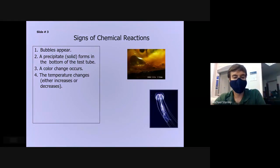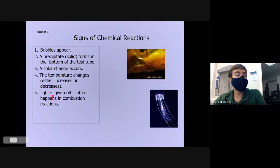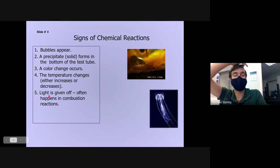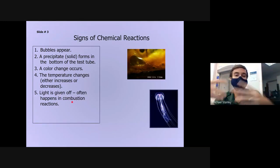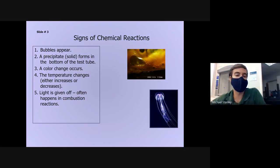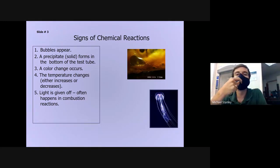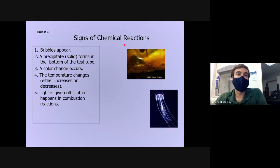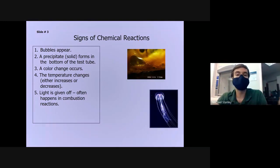Light is another common byproduct of chemical reactions. Obviously combustion reactions like fire produce not only heat but also a lot of light — it'll light up the night when you get a big bonfire going. Another good example in nature is fireflies: those little bugs with the green glow are producing light because of a chemical reaction. There's a special protein inside their abdomens, and when that protein is broken, it releases energy — some of that energy is light energy.